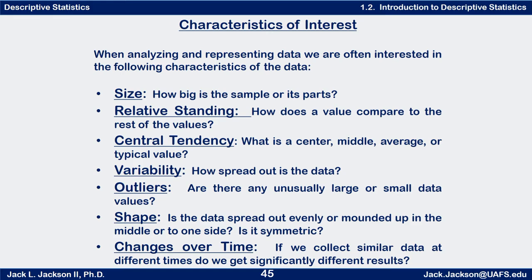Measures of central tendency are probably one of the most important things we want to know about a data set. What is its center, middle, average, or typical value? Those words — center, middle, average, typical — are somewhat vague, but we have specific ways of measuring the center. We have what we call the mean, the median, and the mode — the three most common ways of measuring central tendency — and we have a couple others that we'll study as well.